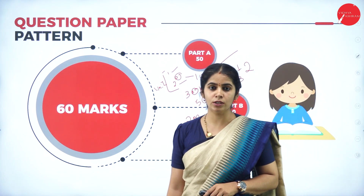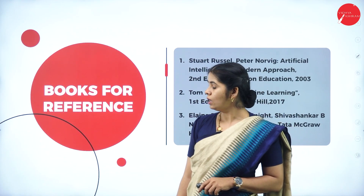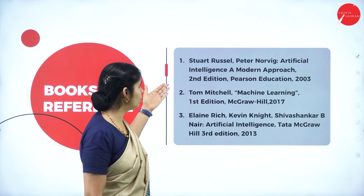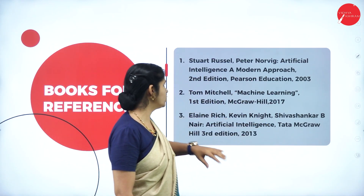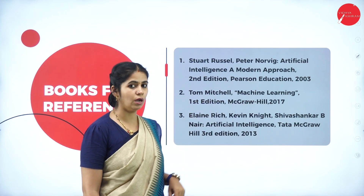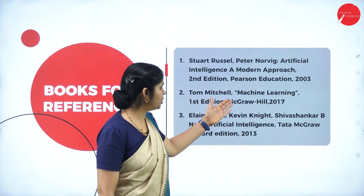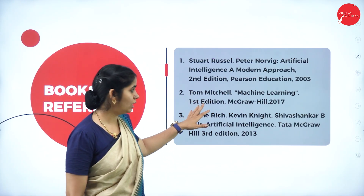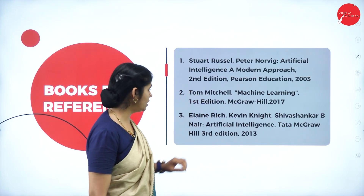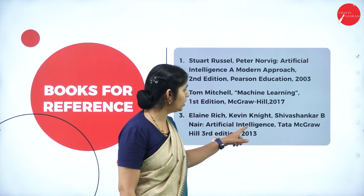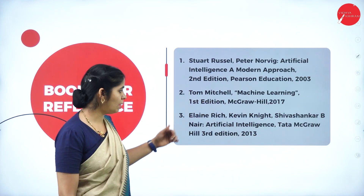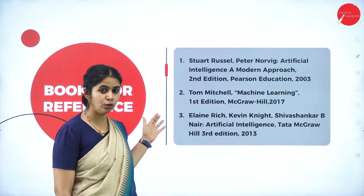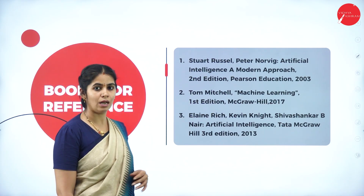Some reference books for Artificial Intelligence: Artificial Intelligence: A Modern Approach, second edition, Pearson publication — especially useful for unit 3 and supervised learning. Machine Learning by the same reference is also recommended. Additionally, Artificial Intelligence by Tata Publications is useful for units 4 and 5. These are the reference books you can refer to for your syllabus. Thank you.